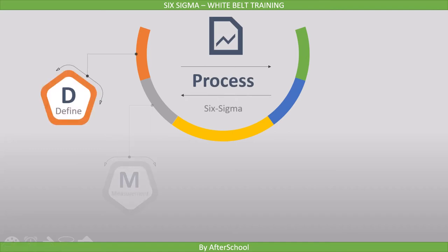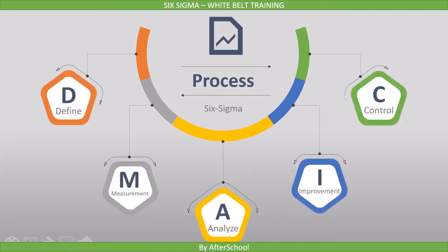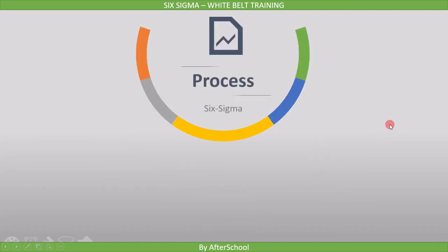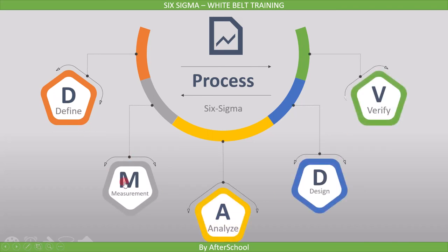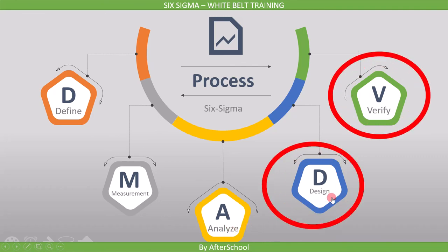After the overview, we will move on to the approaches of Six Sigma, where we will cover two approaches. The DMAIC approach, where D stands for Define, M for Measure, A for Analyze, I for Improve, and C for Control. The next approach is the DMADV approach, where D stands for Define, M for Measure, A for Analyze, D for Design, and V for Verify.